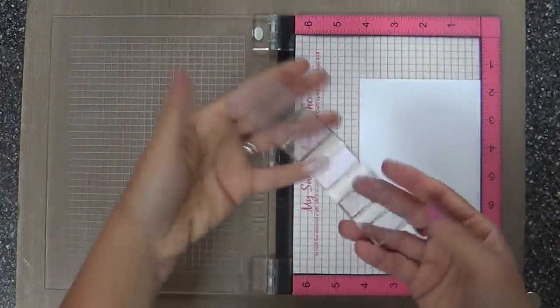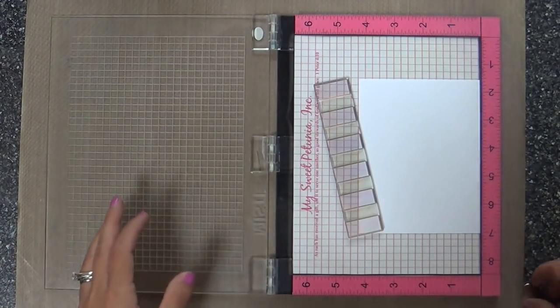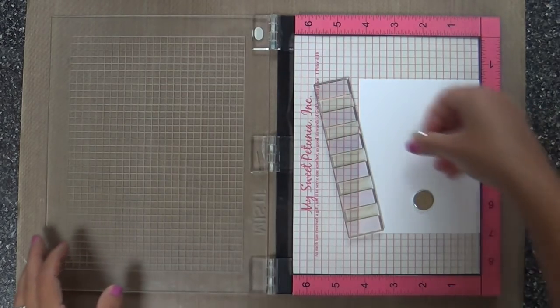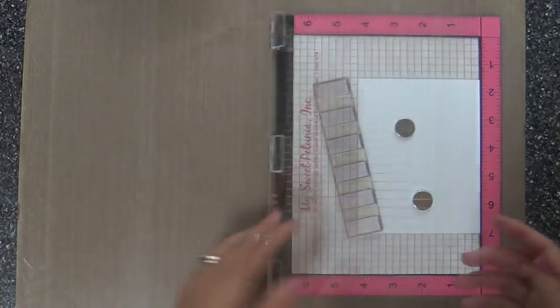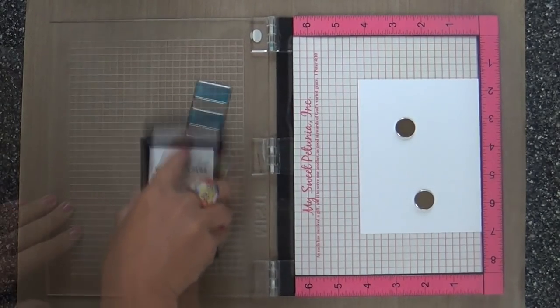I'm using two stamp sets. They're both by Catherine Pooler. They're new. This one here is from the Yay Stripes stamp set. You get three kind of border type images in this stamp set, but this one here has the really thick, bold, short little stripes.